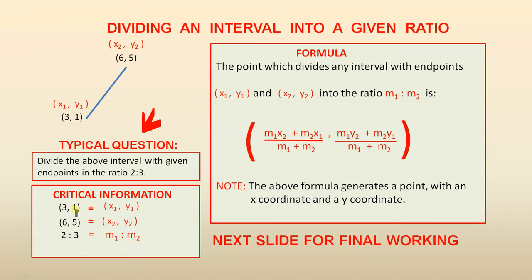Now here is the critical information we need to find the answer. The point (3,1) will make that x1, y1. That's here. The point (6,5) will make that x2, y2. That is here. And the ratio is 2 is to 3. That's how we're dividing the line. We'll call that m1 and m2. So the m1 will be the 2, the m2 will be the 3.